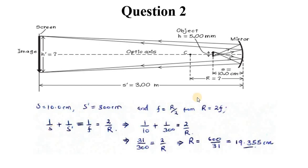We have this formula: 1 over S plus 1 over S prime equals 1 over F. Now that we know what F is in terms of R, we can equate this to 2 over R. This implies that we have 1 over 10 plus 1 over 300 equals 2 over R.